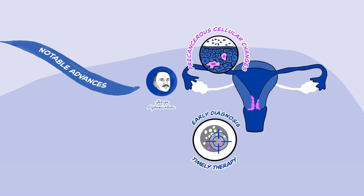Pap smears can even find precancerous cellular changes at a stage when proactive intervention can prevent cancer from ever developing in the first place.